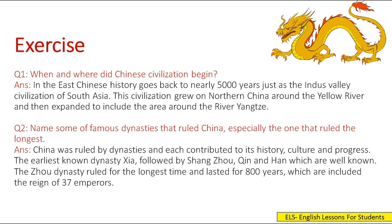Question 1: When and where did Chinese civilization begin? Answer: In the East, Chinese history goes back to nearly 5,000 years, just as the Indus Valley civilization of South Asia. This civilization grew in Northern China around the Yellow River and then expanded to include the area around the River Yangtze.